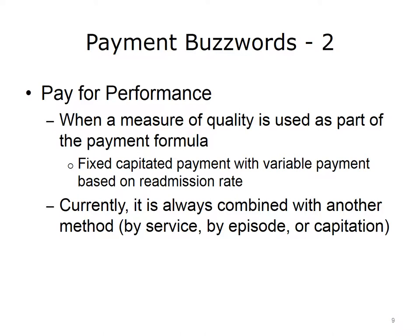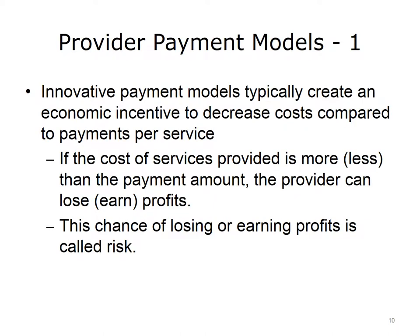In a pay for performance model, a measure of quality is used as part of the payment formula. For instance, there may be a capitated payment rate that varies based on the readmission rate as a measure of quality. Because performance cannot be measured in all aspects, it's always combined with another method, such as service payments, episode, or capitation.